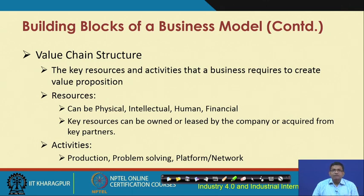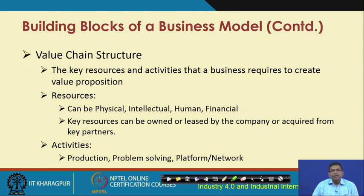The next building block is the value chain structure — the key resources and activities that a business requires to create the value proposition. The value chain structure depends on different types of resources being used and different activities performed. These resources could be physical, intellectual, human, or financial resources, and they can be owned, leased, or acquired from different business partners. Key activities include production, problem solving, platform, and network considerations.